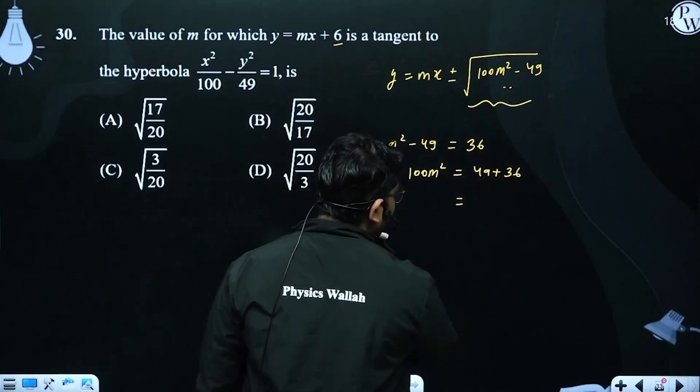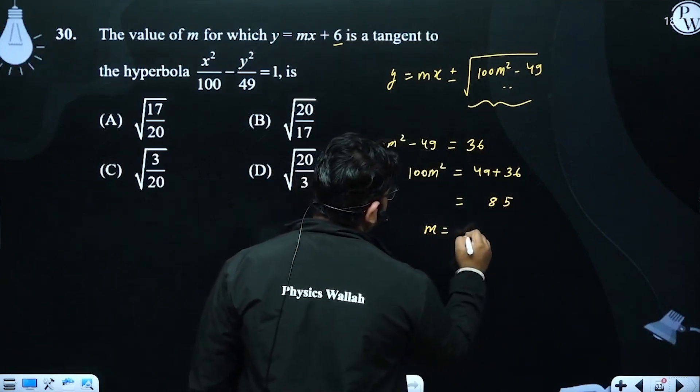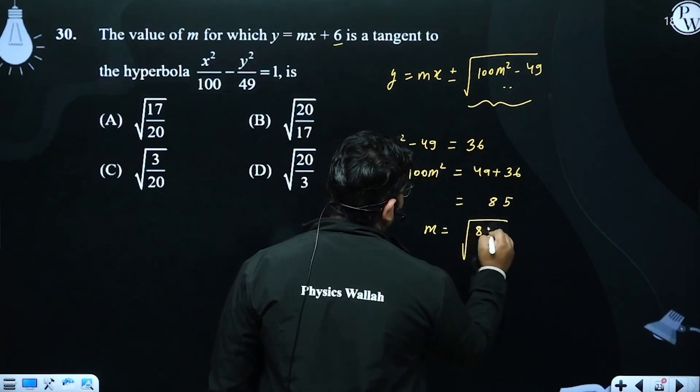Solve. How much will it be? 85. So m value is root under 85 by 100.